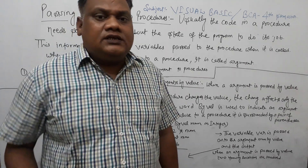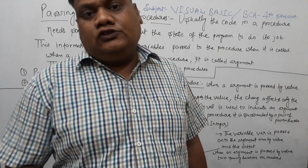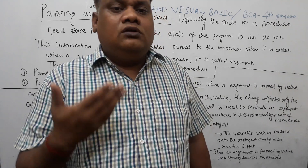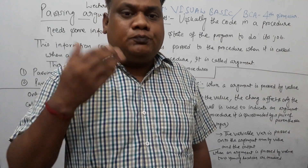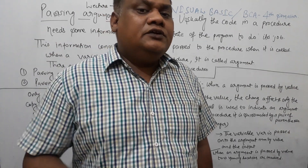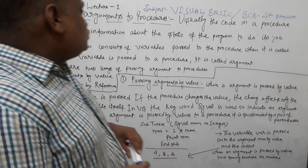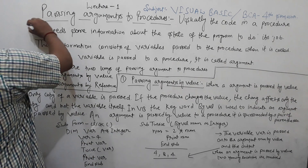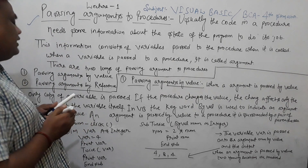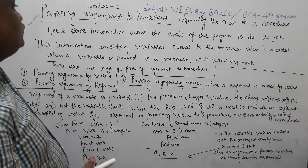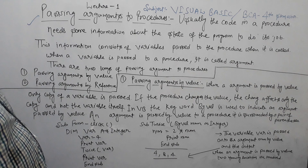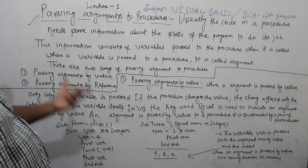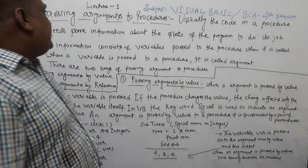First of all, in Visual Basic BCA 4th semester, we have covered some topics in previous lectures. Passing arguments to a procedure can be done by value or by reference. This is lecture 1, where we will pass arguments by value. In lecture 2, we will cover passing arguments by reference.